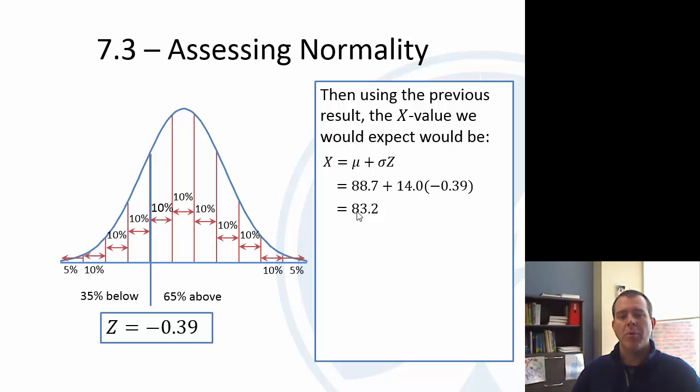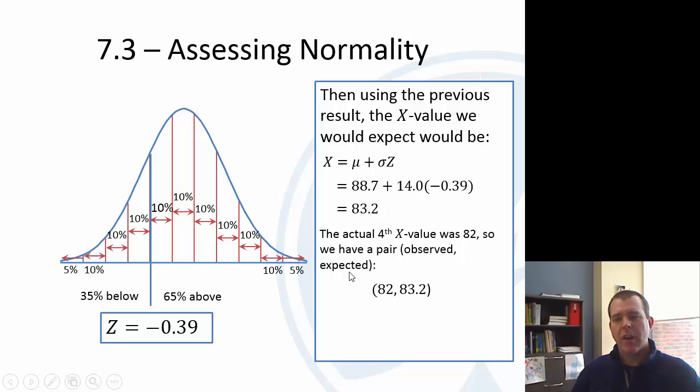If the variables were normally distributed, the fourth value should be 83.2. The actual fourth value from the previous slide was 82. So we have this ordered pair - observed and expected is 82, 83.2. The observed was 82. If it were perfectly normally distributed, we would have expected 83.2.